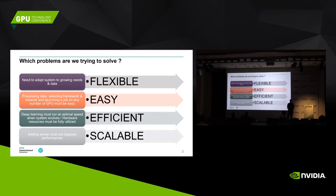Some customers are already up to speed on deep learning and need something that makes sense and scales very quickly on the cluster. But some others are still in the investigation phase. In that case they need a user interface to pre-process the data, to select what framework and what network to apply to the data, and then launch the job — without having to care about running an efficient job on the system. So that's the easy part.